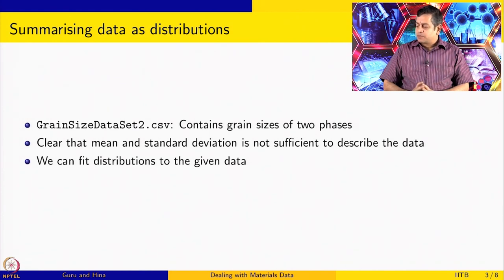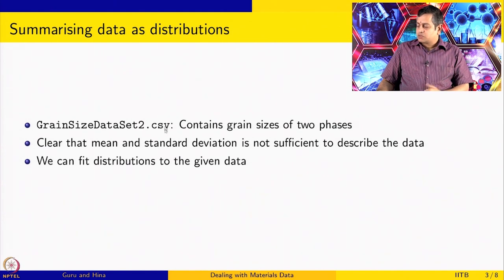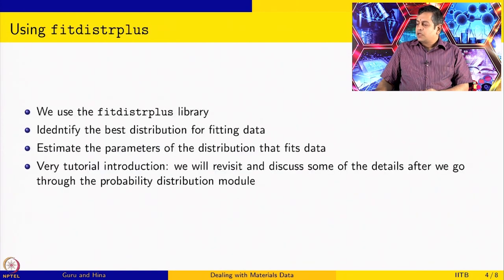We have not done probability distributions yet and we are going to do that as the next module. Some of the ideas that we are going to use here, we are going to revisit after we do the session on probability distributions. But at the moment, we will just use some existing libraries, use this data, look at the fit, and identify what fits the given data better. We use the fitdistrplus library, which is used to identify the best distribution for fitting the data and also estimates the parameters of the distribution. This will be a tutorial introduction.